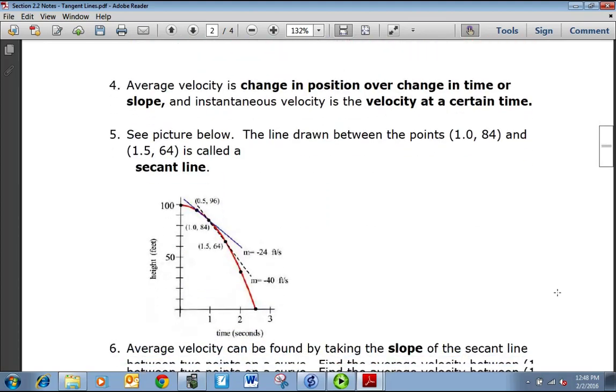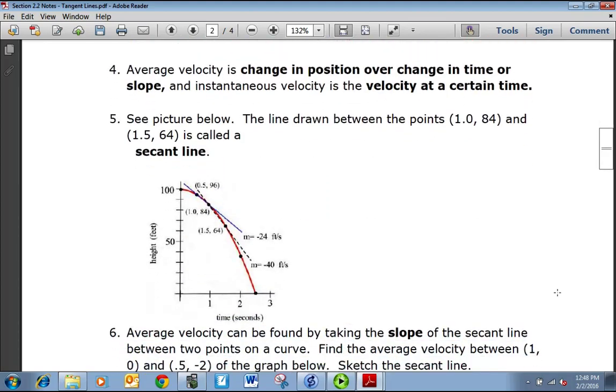All right, so now that we're warmed up, average velocity is the change in position over the change in time, or slope. If you're asked to find the average velocity between two points, you're essentially finding the slope. As opposed to instantaneous velocity, that's the velocity at a certain time. That's what we're going to be building up to, but we're going to start by just looking at average velocity first.